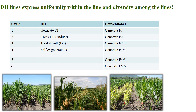Double haploid lines express uniformity within the line and diversity among the lines. By taking the conventional and double haploid approaches, uniformity is obtained within few generations — up to 4 generations in double haploid. The steps are: generation of F1, crossing F1 into inducer, then treating and selfing D0 and generating D1. D1 is the double haploid population and D0 is in haploid condition, ready to become doubled haploid. In the conventional process there is a long procedure: F1, F2, F2-derived F3, F3-derived F4, and so on.